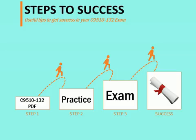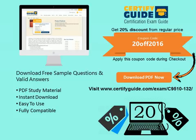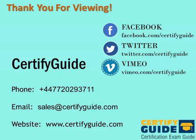In order to get success in your C9510-132 exam, you need to take PDF study material and practice it well, then take the real exam for guaranteed success. You can get free demo questions or buy full training material at the given link in the description of the video. Use the given coupon code for 20% discount. For further information, please visit the link.